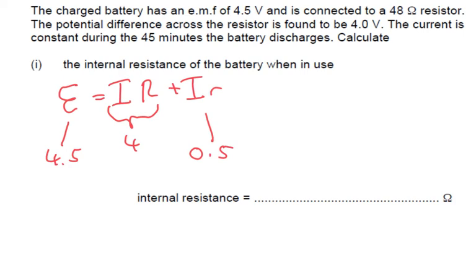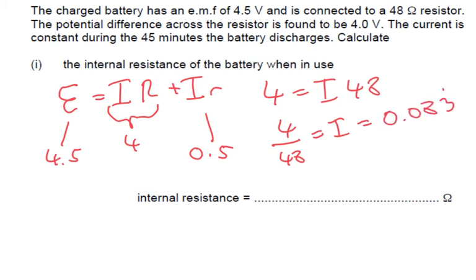And if we have 48 ohms, so we know 4 equals I times 48. So 4 over 48 is going to equal our current. So 4 divided by 48 is 0.083 recurring. So we've got our current.